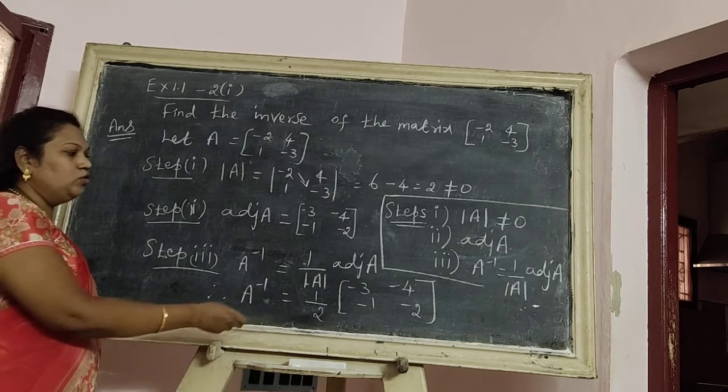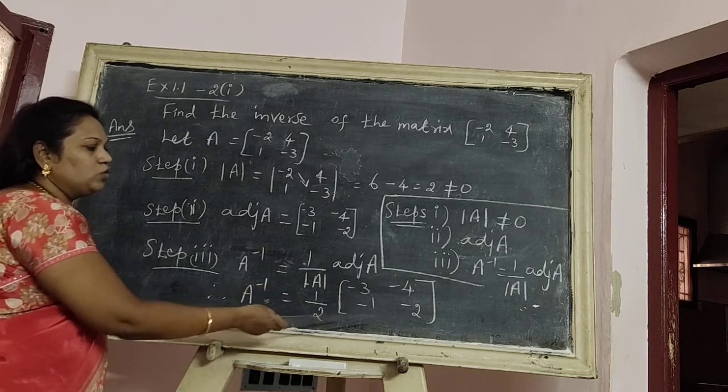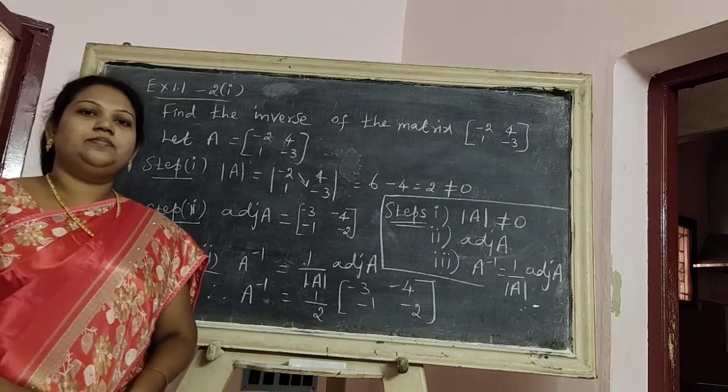A inverse equal to 1 by 2 times [-3, -4, -1, -2]. Okay? Thank you.